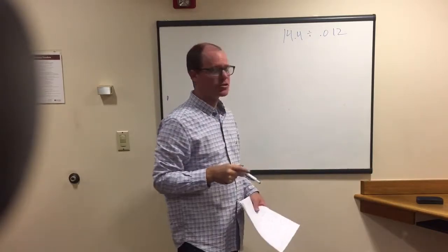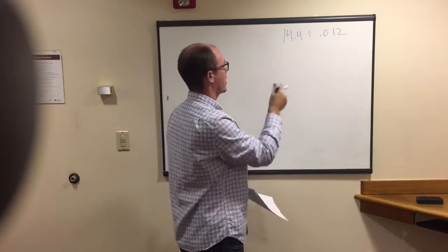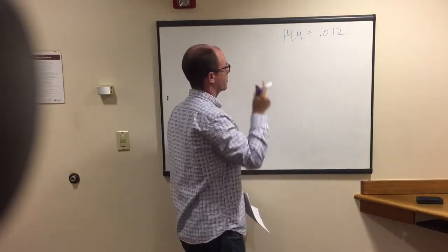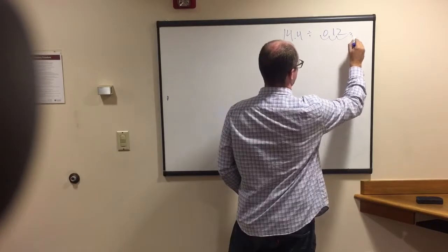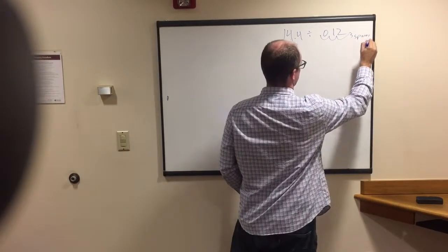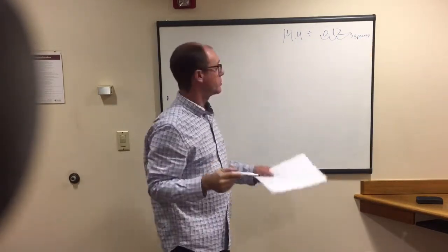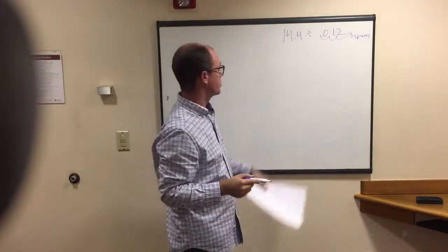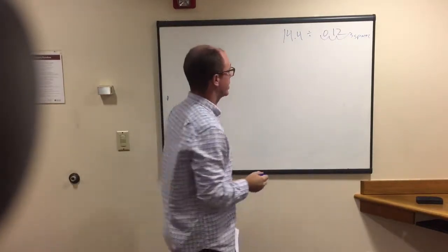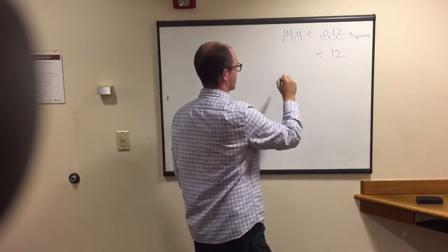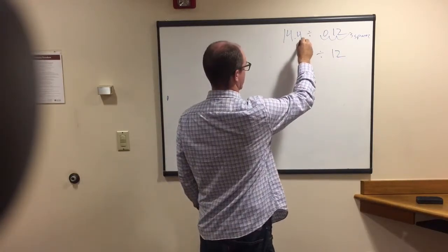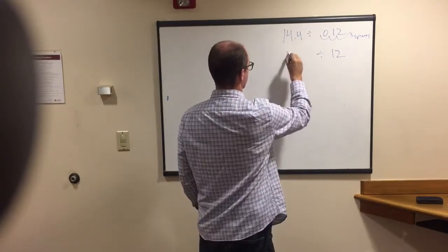We see this ugly 0.012, we certainly don't want to divide that, it's gonna take forever. So what we have is you move it one, two, three spaces to the right and then we get rid of that decimal point, we've got 12 here. Then we got to do the same thing to the other side - three spaces, and then two more, and that gives us fourteen thousand four hundred.